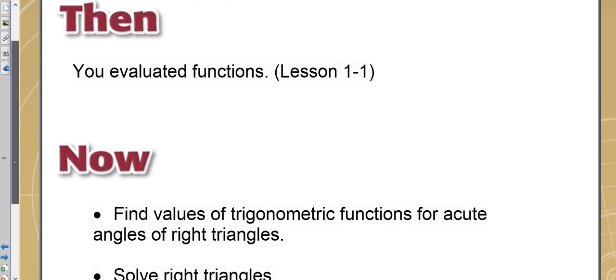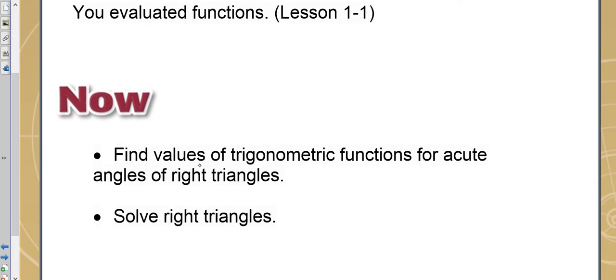Whereas in the past we might have evaluated functions, today we're going to look at how to find values of trig functions for acute angles. And remember, acute means less than 90 degrees. So all angles less than 90 of right triangles. And this means there is one angle that will be exactly 90 degrees, so less than or equal to 90 degrees here.